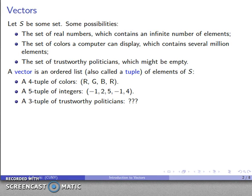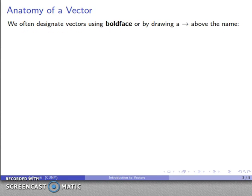A little bit about the anatomy of a vector. We often designate vectors using either boldface type or by drawing an arrow above the name of the vector. So we might talk about the vector v in caps, or the vector a with an arrow over it. Typically in print you see the boldface notation, but because it's hard to write boldface on a board, we often write it with the arrow over top.